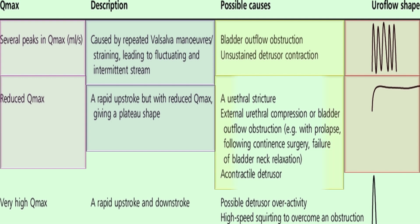Possible causes include urethral stricture, external urethral compression, or bladder outflow obstruction — for example with a prolapse, following continence surgery, failure of bladder neck relaxation, or an acontractile detrusor.